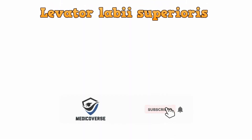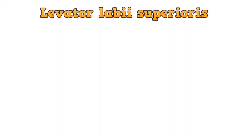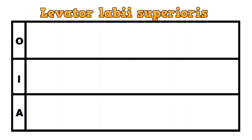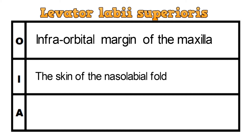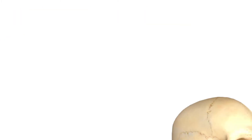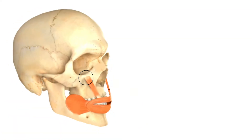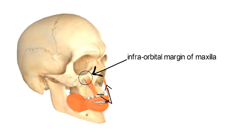The first muscle we will discuss is the levator labii superioris. It originates from the infra-orbital margin of the maxilla and gets inserted in the skin of the nasolabial fold. The action of the muscle is to raise the upper lip. The area in the circle is the origin of the muscle — the infra-orbital margin of the maxilla — and these two muscles you can see are the levator labii superioris.